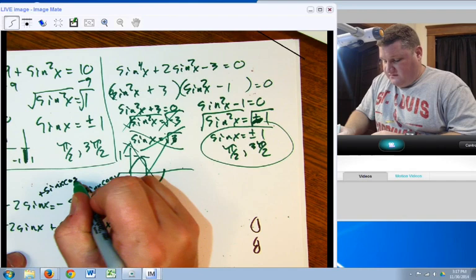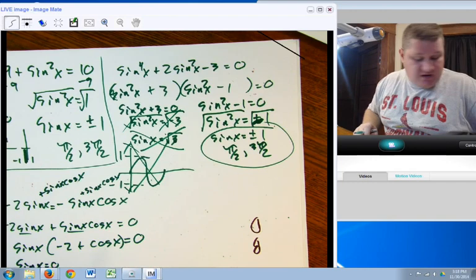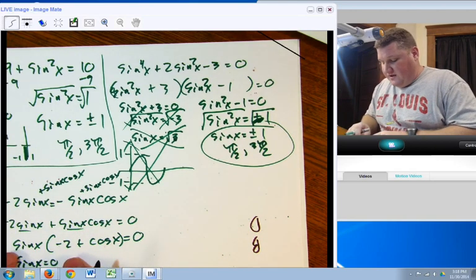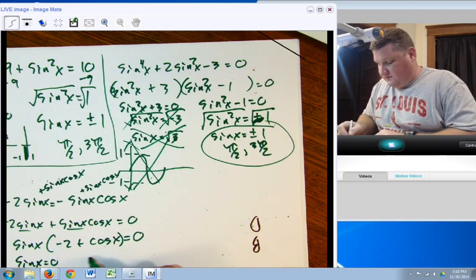So, sine x equals 0, that happens at 0 degrees for a primary value or 180 degrees for a secondary value. I told you, you need to know those quadrantal angles fast, fast, fast. Now, so with this, by moving it over, taking the sine x out, and we end up with this. We break it into these two pieces, 0 and 180. You've got to know those quadrantal angles.